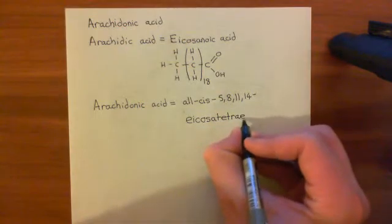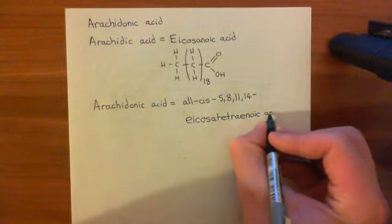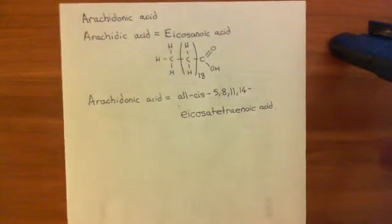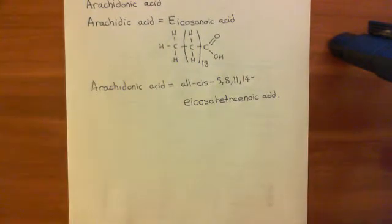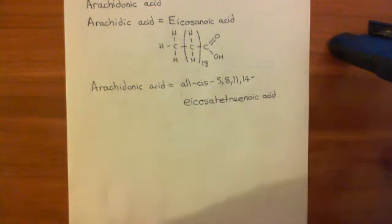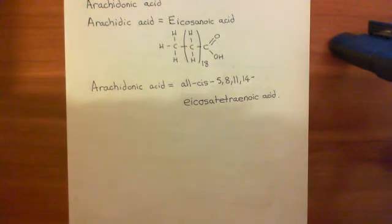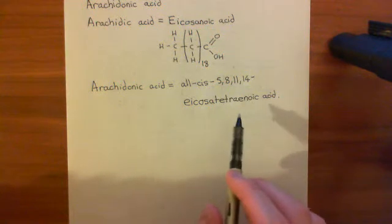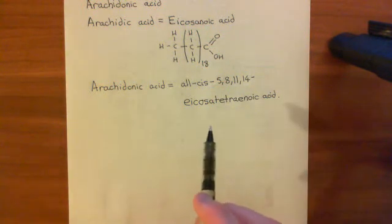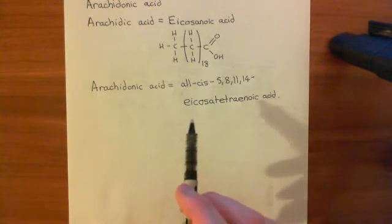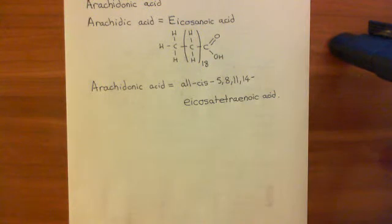Those of you who were into the omega-3 craze that happened a few years ago will remember this looks quite like the name of one of the omega-3 fatty acids they advocated we take to strengthen our minds and hearts. However, icosatetraenoic acid — arachidonic acid — is not an omega-3. Instead, it's what's known as an omega-6, and I'll explain what that means when I've drawn the structure out.